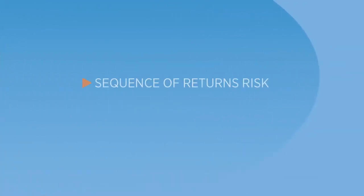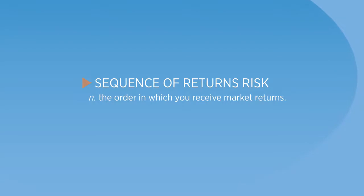What is sequence of returns risk? Sequence of returns risk is the order in which you receive market returns. If the market is volatile, the sequence of returns will cause the value of your portfolio to fluctuate.